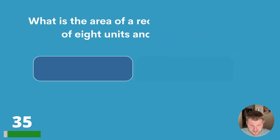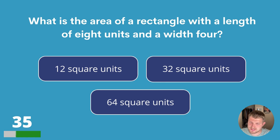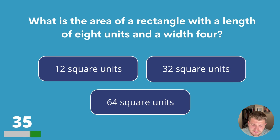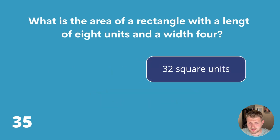Question thirty-five. What is the area of a rectangle with a length of eight units and a width of four? Twelve square units, thirty-two square units or sixty-four square units? The answer is thirty-two square units.